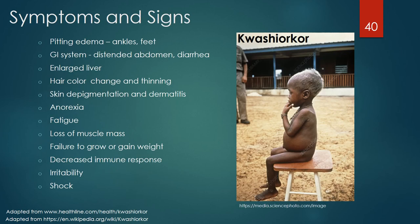Signs and symptoms of kwashiorkor include pitting edema of the ankles and feet, which is a defining sign of the illness. It also commonly presents with gastrointestinal signs including abdominal distension, diarrhea and liver enlargement. A change of hair color to a lighter or rusty tone along with hair thinning is common. Other signs and symptoms include skin depigmentation and dermatitis with flaking, anorexia, fatigue, loss of muscle mass, failure to grow or gain weight, decreased immune response resulting in increased secondary infections, irritability, and in severe cases, shock.